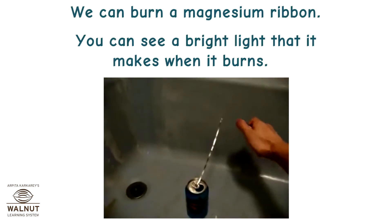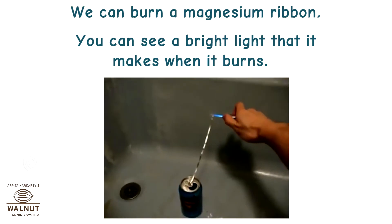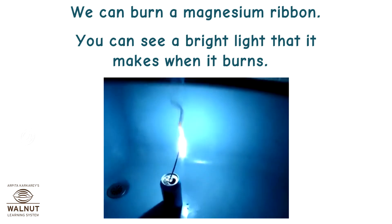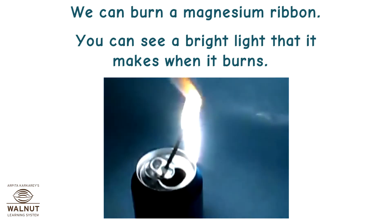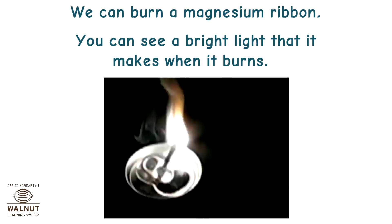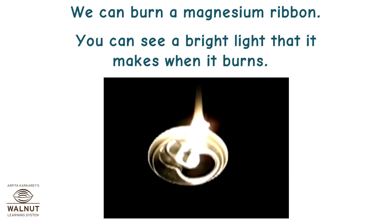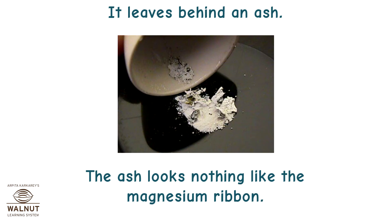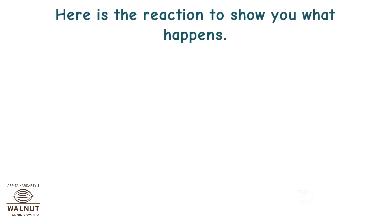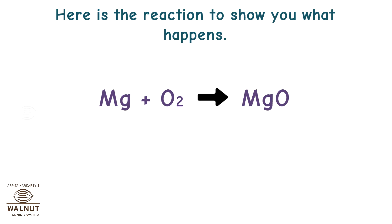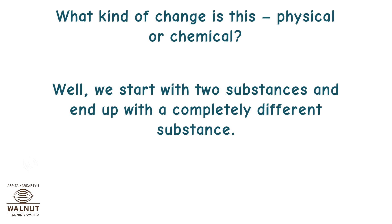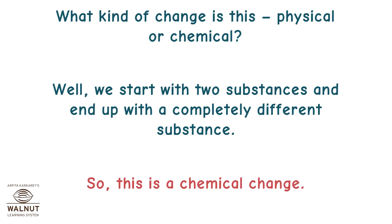We can burn a magnesium ribbon. You can see the bright light it makes when it burns, and it leaves behind ash. The ash looks nothing like the magnesium ribbon. The reaction is: Mg + O2 = MgO. We start with two substances and end up with a completely different substance — so this is a chemical change.